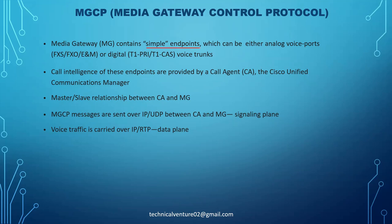This media gateway contains simple endpoints which can be either analog voice ports or digital trunks — analog voice ports such as FXS ports, FXO ports, E&M, or digital ones like T1 PRI, T1 CAS voice trunks — CAS that is Channel Associated Signaling — or the normal PRI.